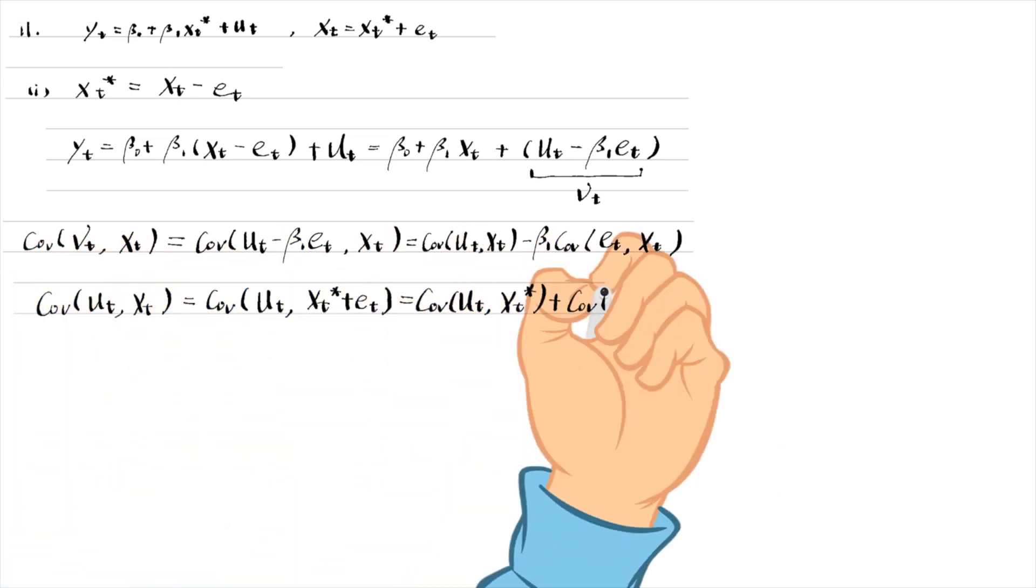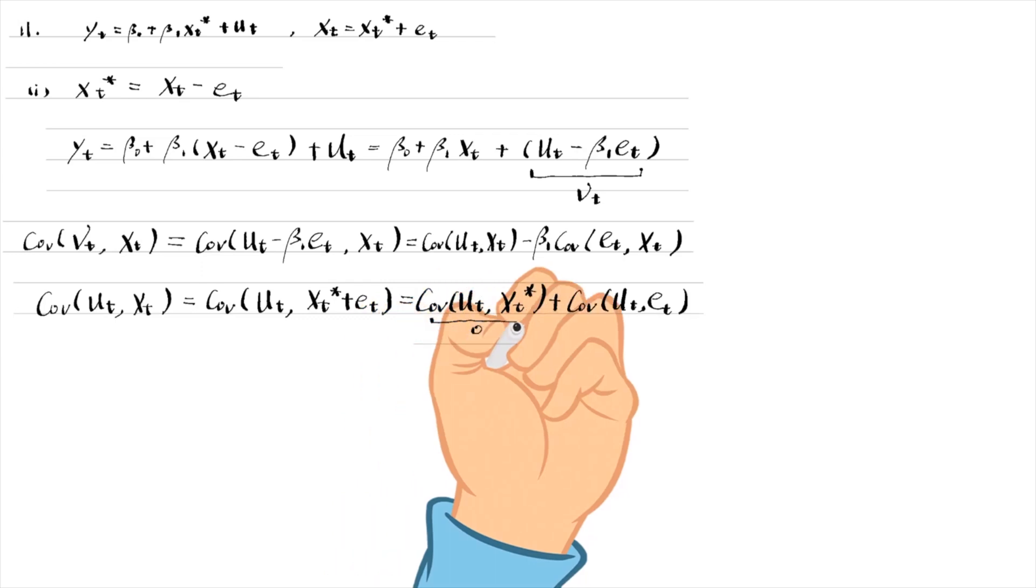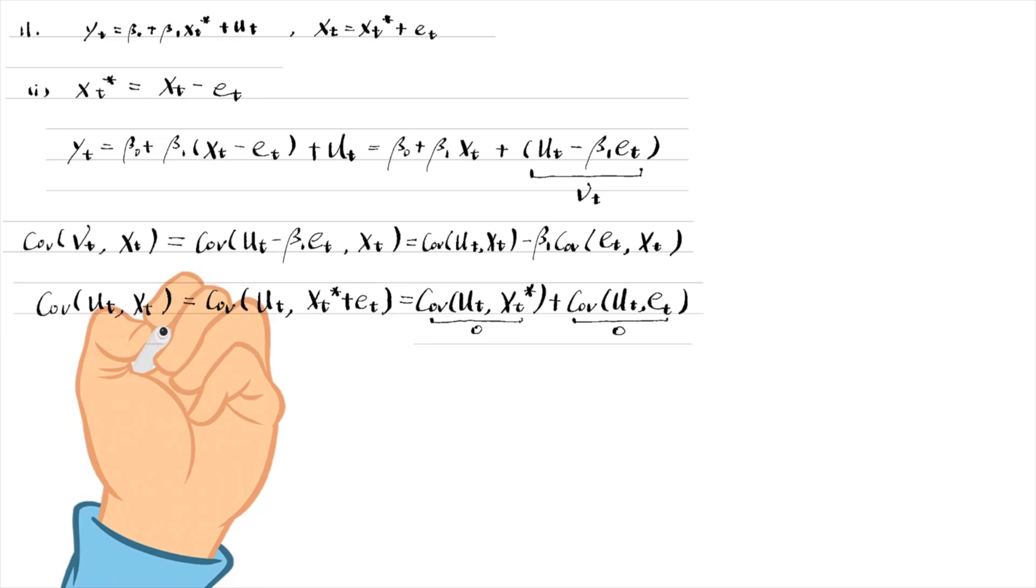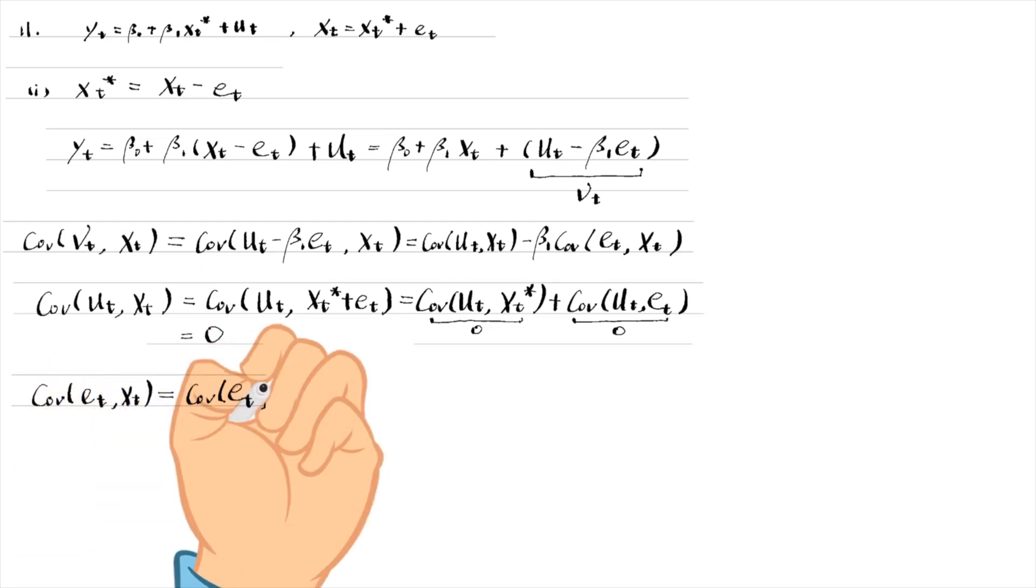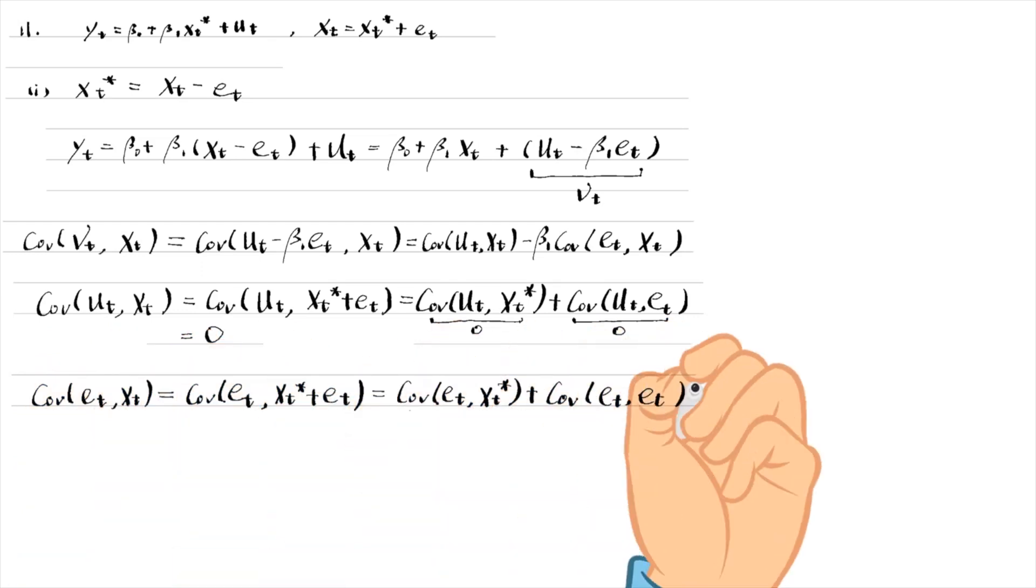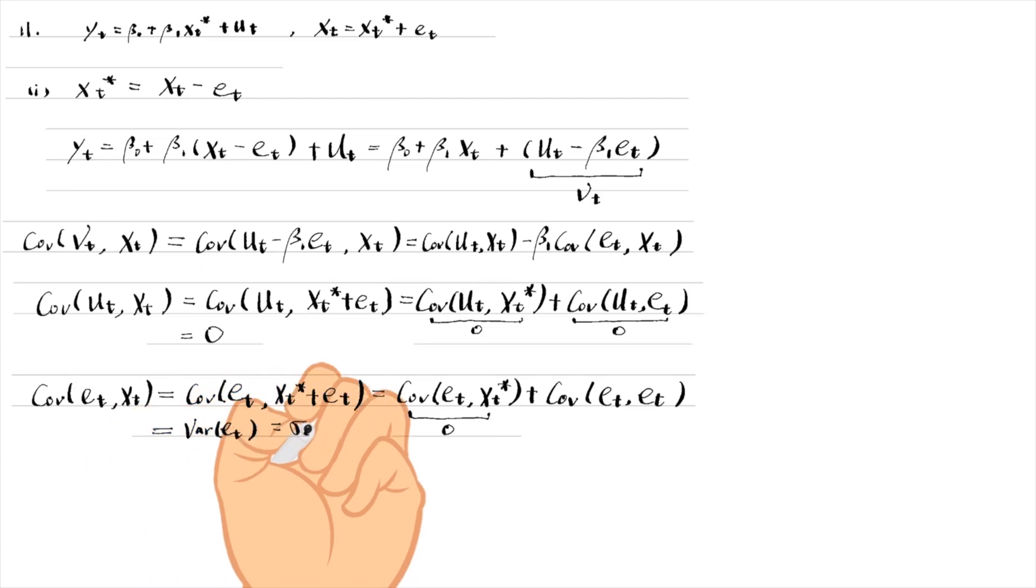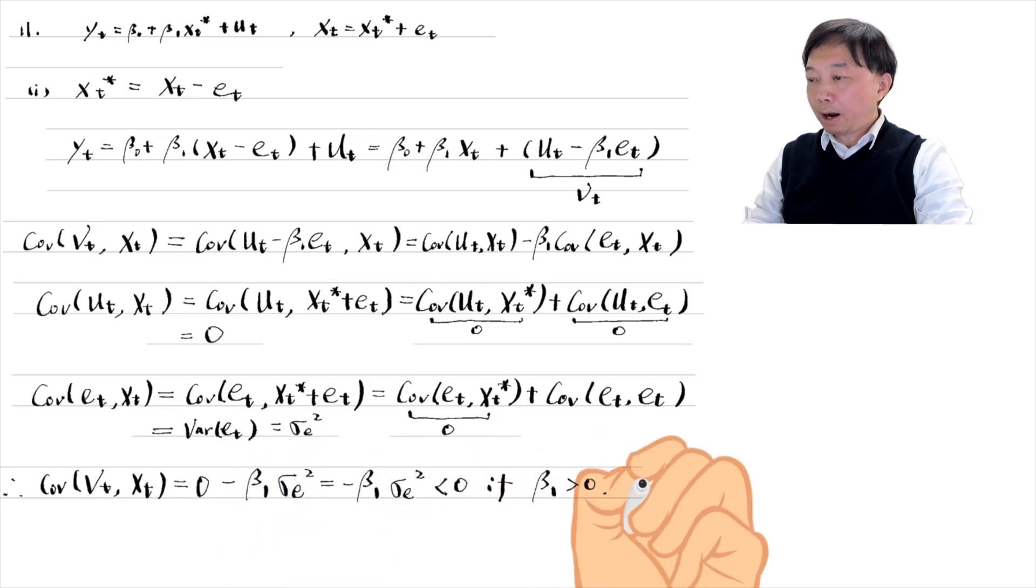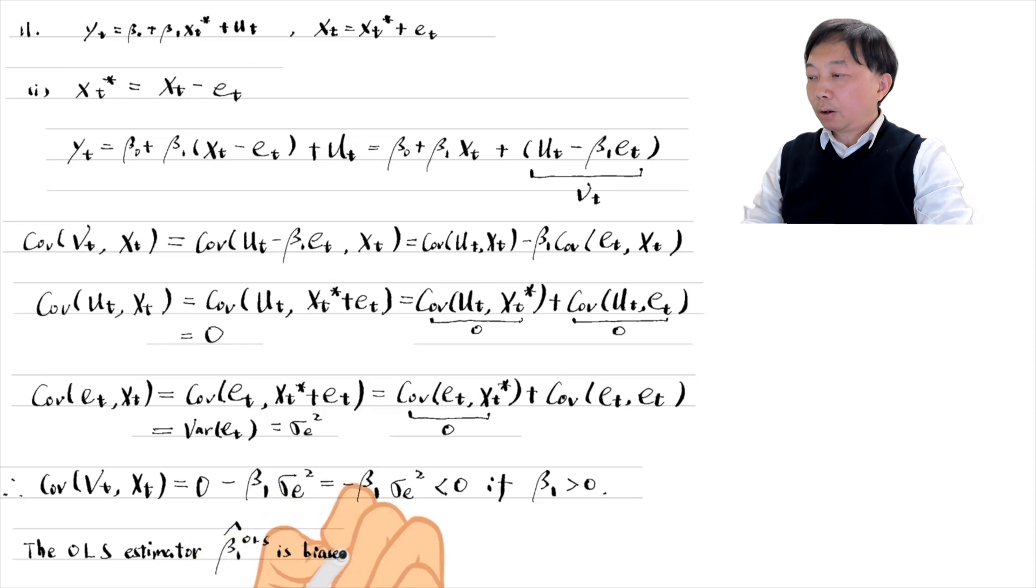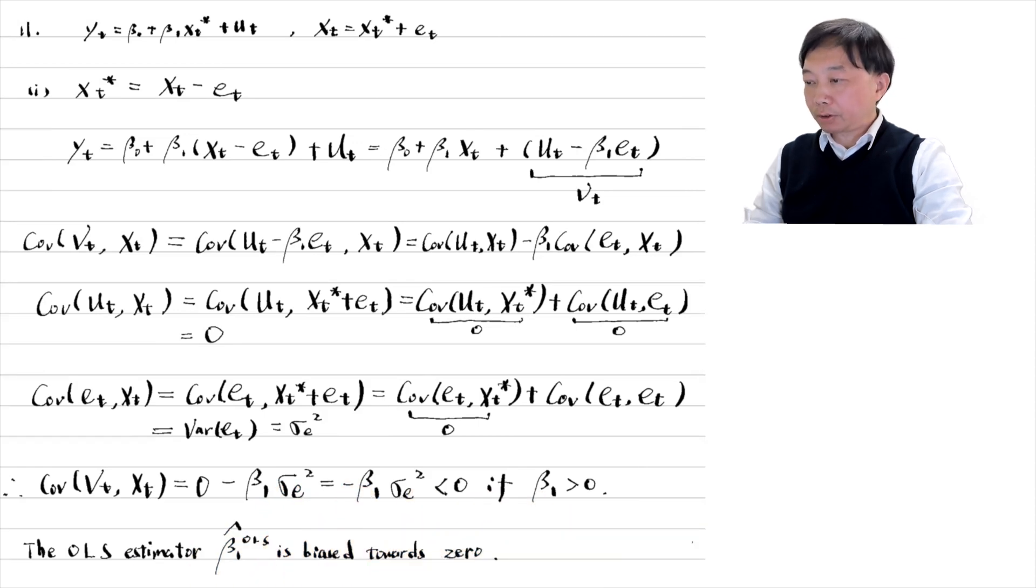If β1 is positive, the covariance is negative. The OLS estimator β1 hat is biased towards zero. It is the result of classical measurement error in the explanatory variable.